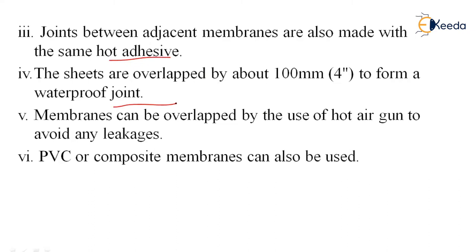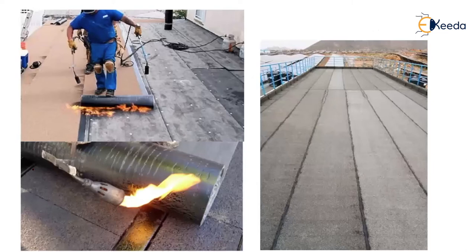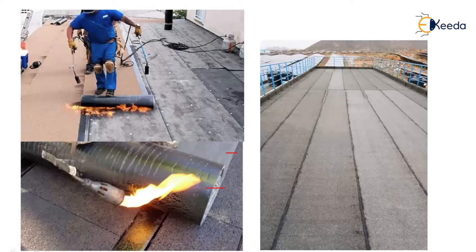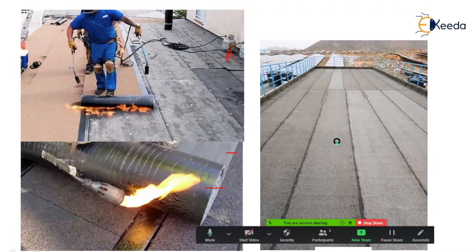Membranes can be overlapped using a hot air gun to avoid leakages. We also have PVC membranes or composite membranes, but bituminous is the most common. The blowtorch is used — one part of the membrane has an adhesive, with the outer and inner surfaces in different colors. This needs to be heated up so the adhesive sticks layer upon layer. The person unrolls the bituminous rolls, uses the blowtorch with its gas supply, and pastes them firmly. If not stuck well, it may lead to water seepage to the below surface.